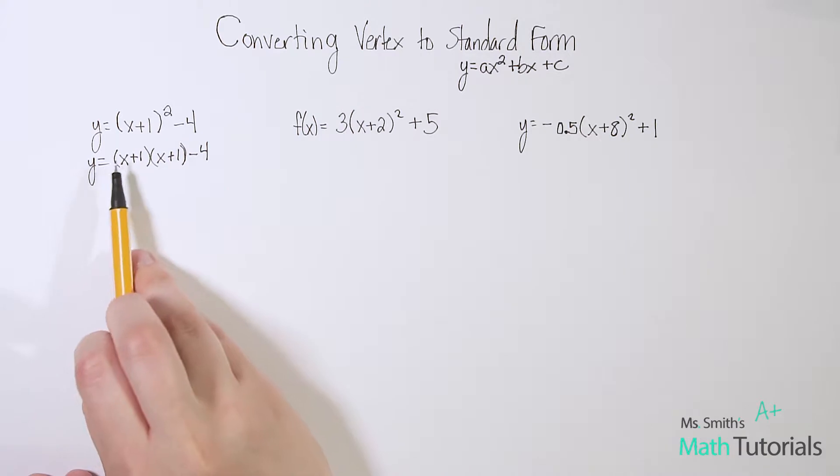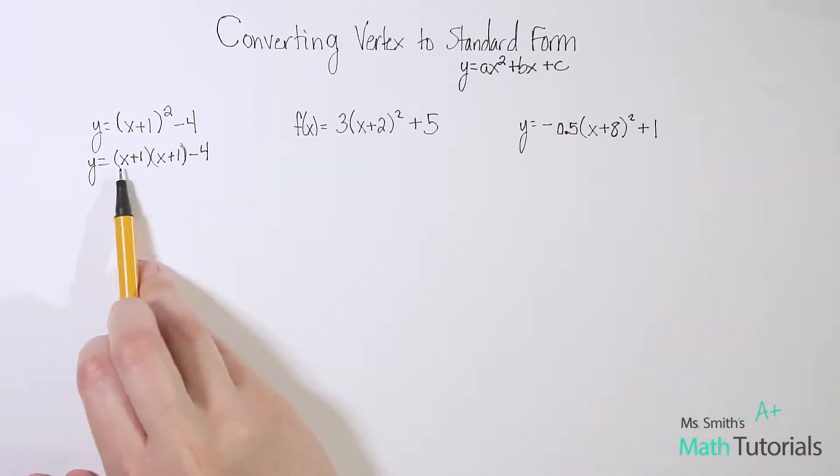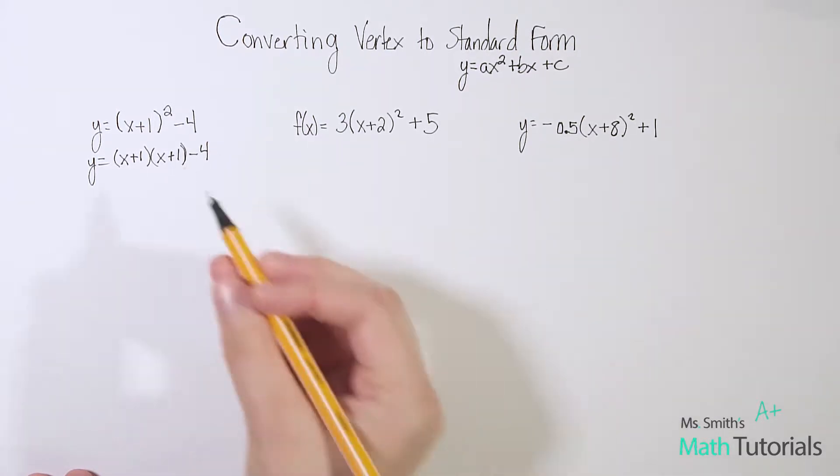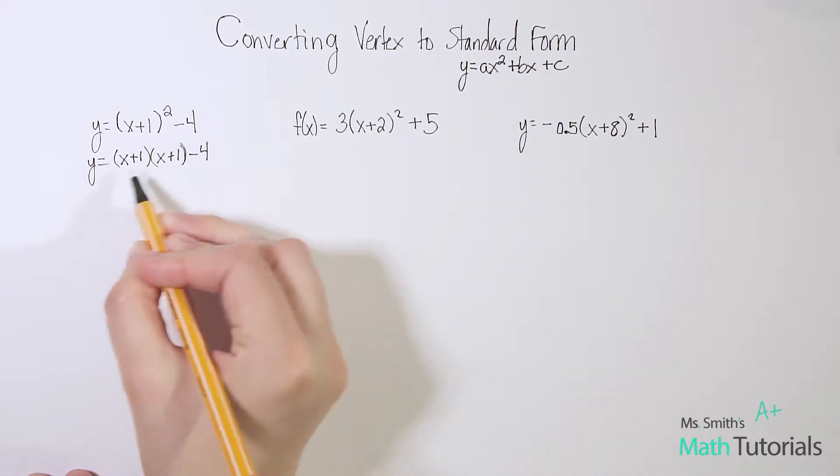At this point I've got a binomial times a binomial, and hopefully you're thinking we foil those, because we do. We're going to foil these together. It's important we keep this -4 out here separate. It's just going to kind of tag along as we go, but we're not going to use him until the very end. Let's worry about foiling this first.